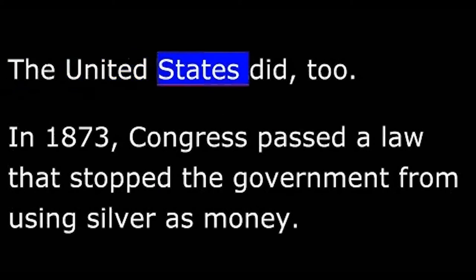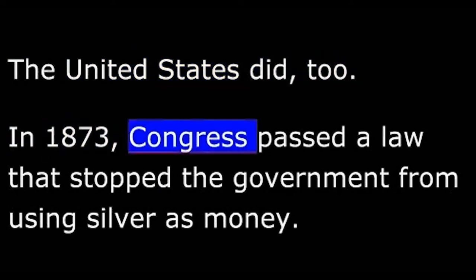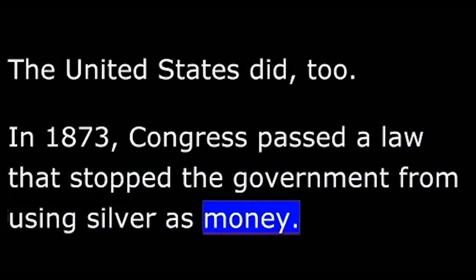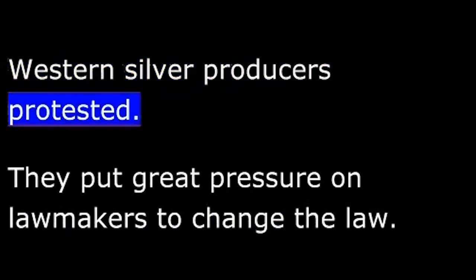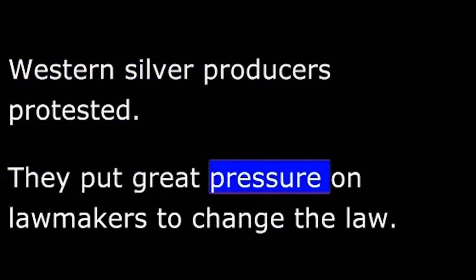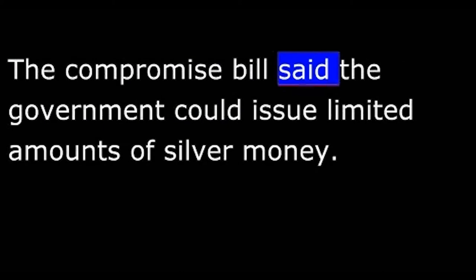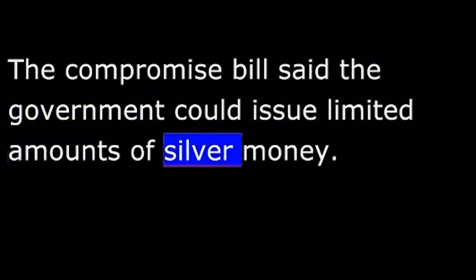The United States did too. In 1873, Congress passed a law that stopped the government from using silver as money. Western silver producers protested. They put great pressure on lawmakers to change the law. Five years later, Congress passed a compromise bill. The compromise bill said the government could issue limited amounts of silver money.